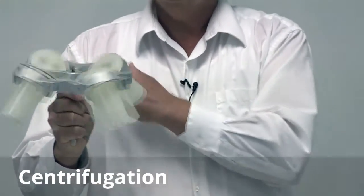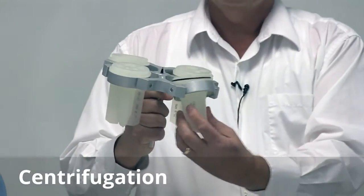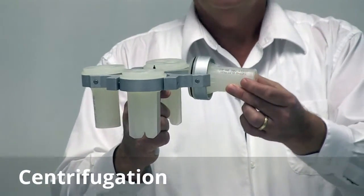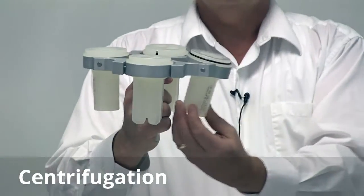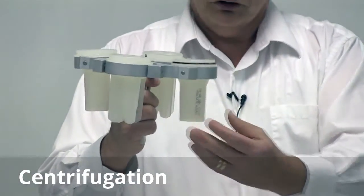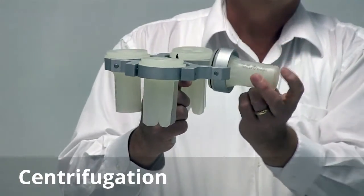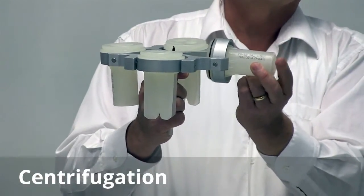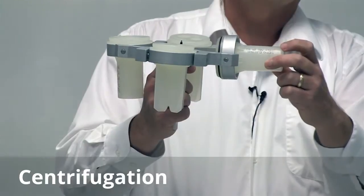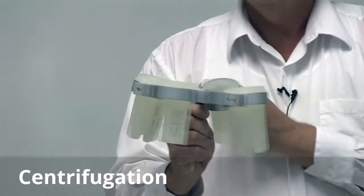You can see this is a swinging bucket rotor, and as the rotor begins to spin, the buckets actually swing out into the horizontal position from their resting position of vertical, so that the force being applied actually would be centrifuging and pelleting the material into the bottom of the tube.